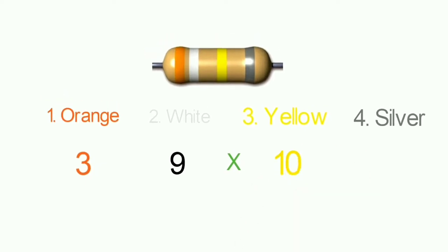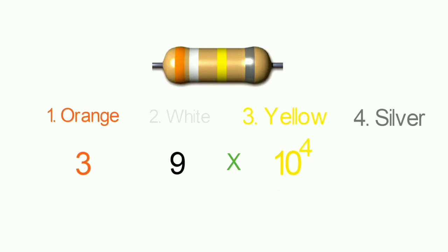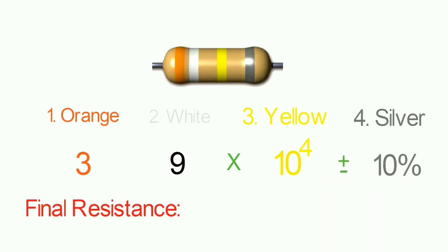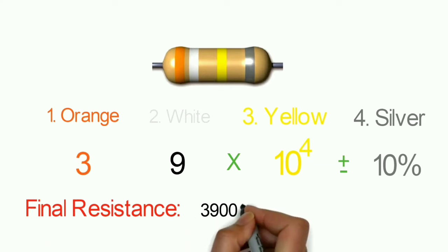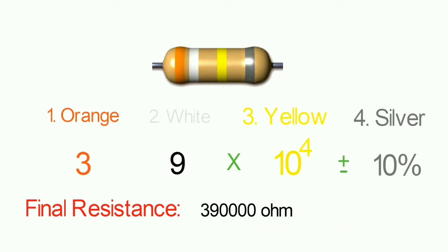So you multiply 39 by 10 raised to the power 4. The silver color band indicates a tolerance of plus or minus 10%. Therefore, the final resistance value is 39 × 10^4 ohms, with a tolerance of plus or minus 10%.